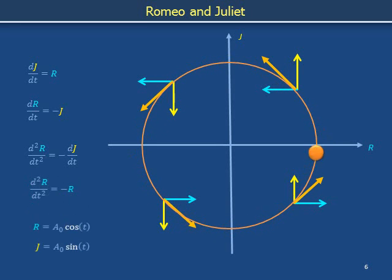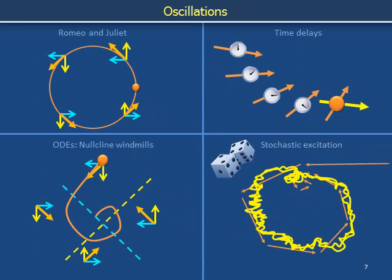One ingredient we can use when building a dynamical system to model oscillatory behavior is the inclusion of a negative sign in one equation and a positive sign in the other, as illustrated in the equations djdt equals positive r and drdt equals negative j. We've just developed an understanding of oscillation in terms of quivers on direction fields and signs in differential equations. In the next section we consider the angles at which nullclines pass through critical points on phase portraits.